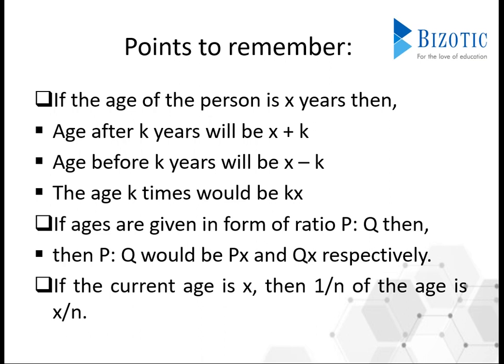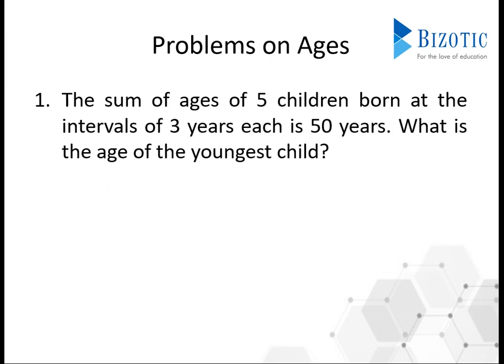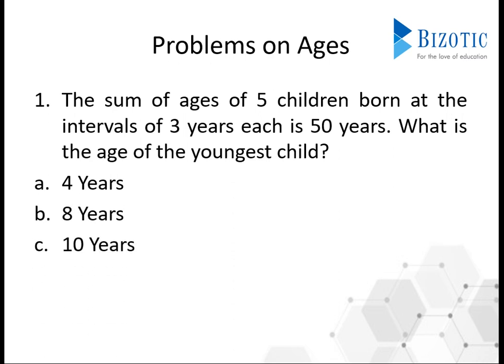So now with these concepts, we will directly start with problem solving. The first problem: the sum of ages of 5 children born at an interval of 3 years each is equal to 50 years. Then what is the age of the youngest child? The options are 4 years, 8 years, 10, and 12.